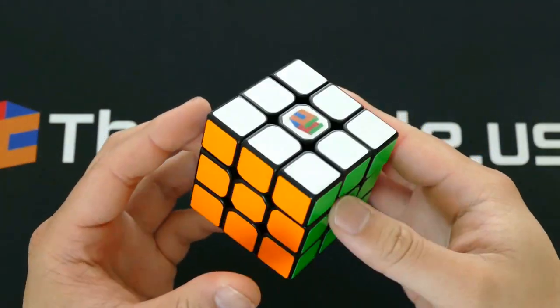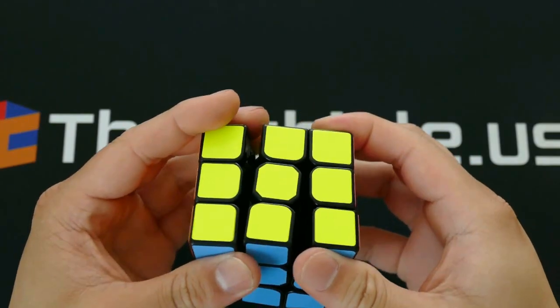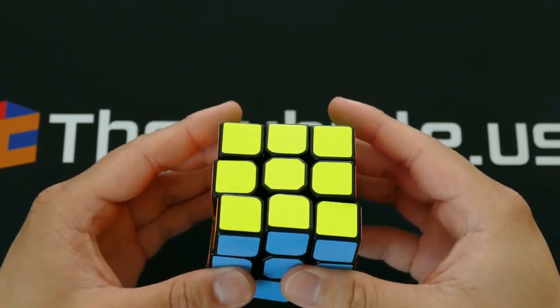The Hualong is a light speedy cube designed for competitive solvers. It measures 57 millimeters across and weighs 86 grams with stock stickers.